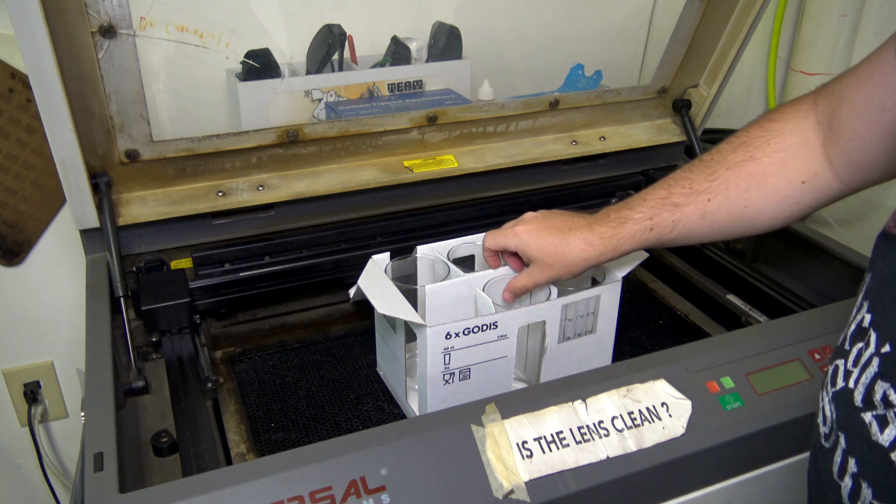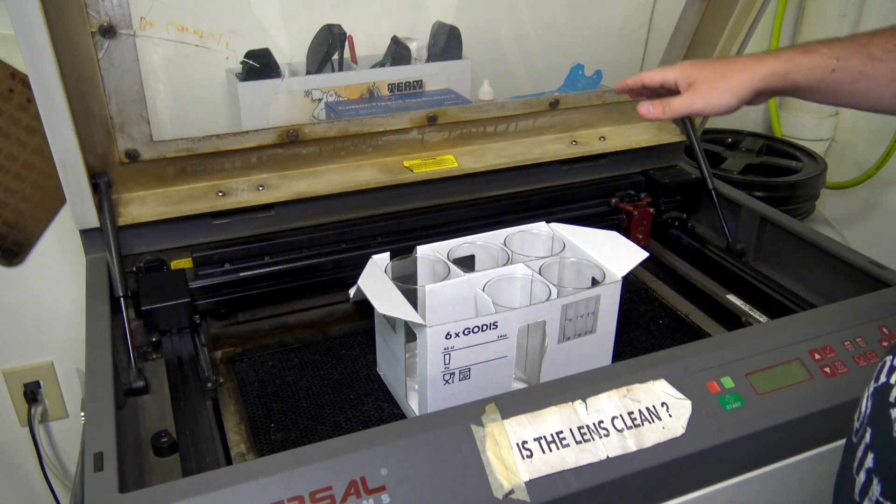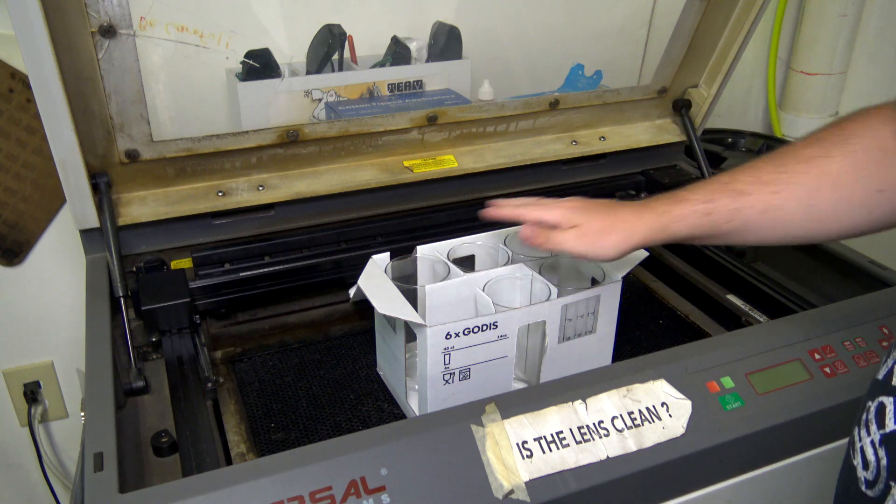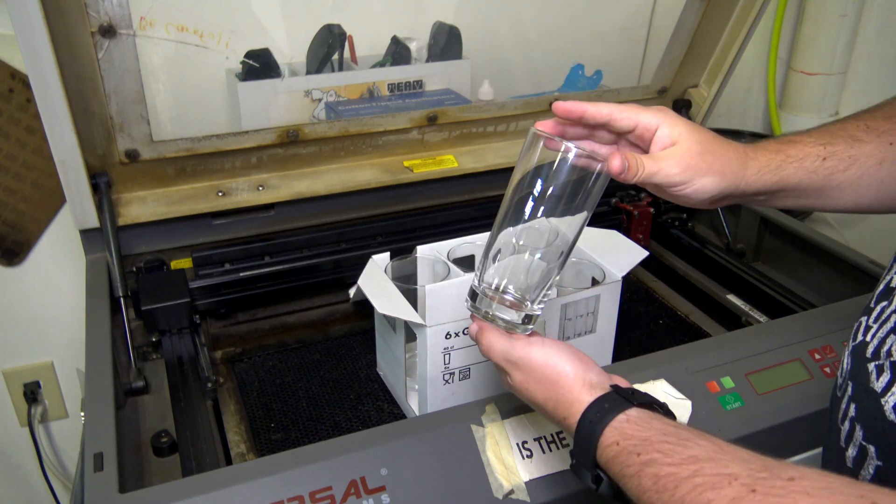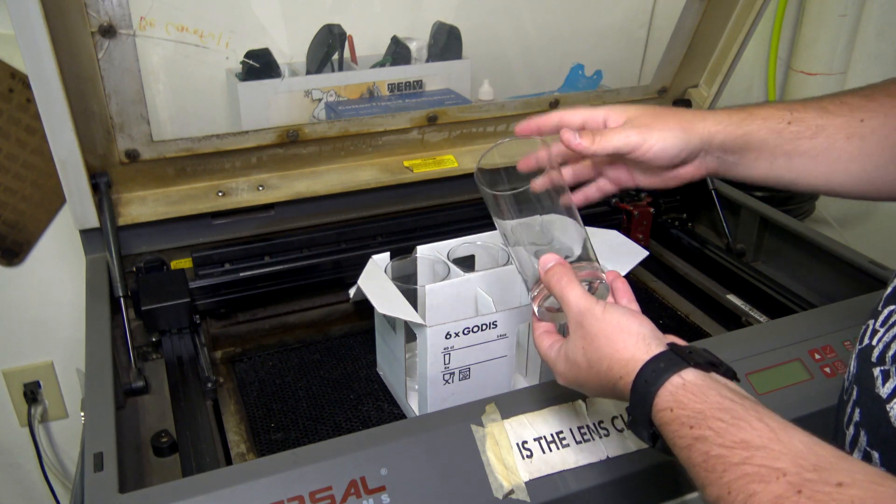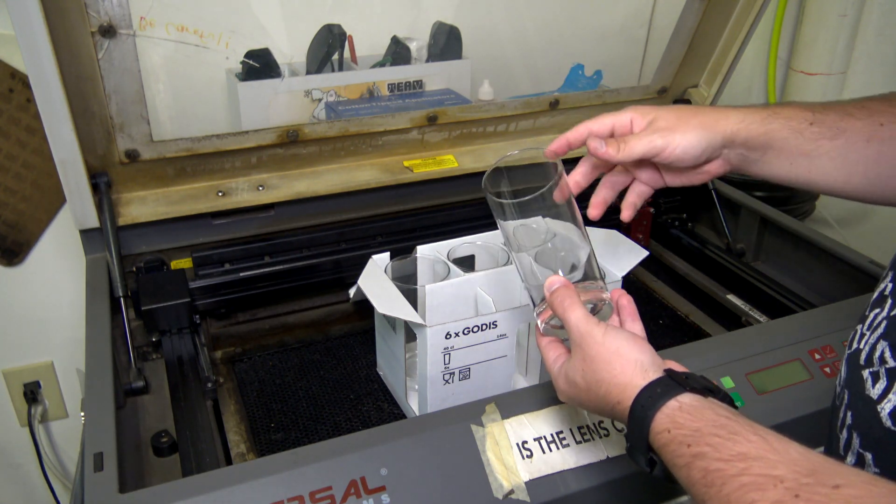Now the problem that we come across is the laser cutter is designed for cutting flat surfaces, but as you can tell an IKEA glass is cylindrical. So how do we etch something on a cylindrical surface using a laser cutter?